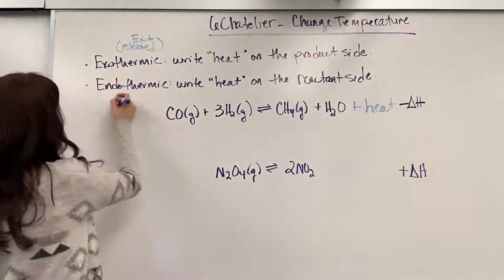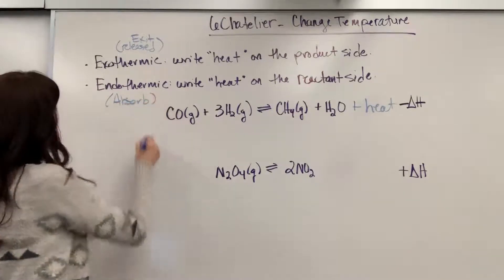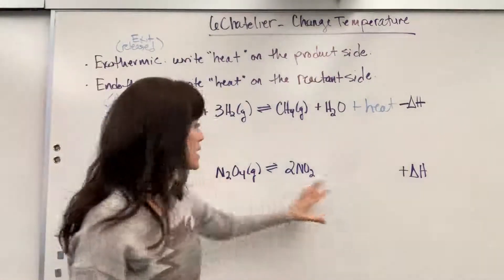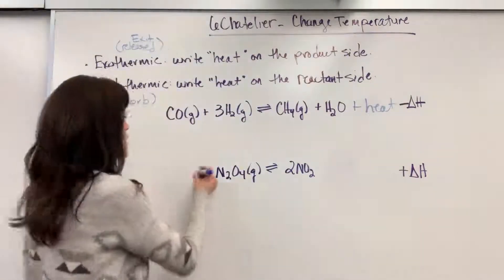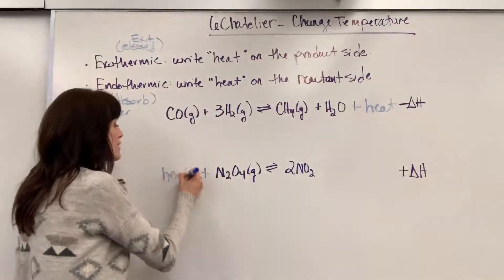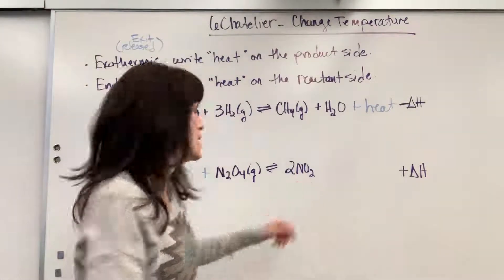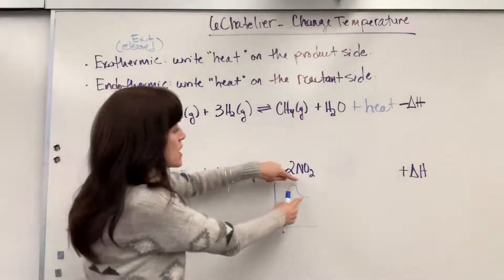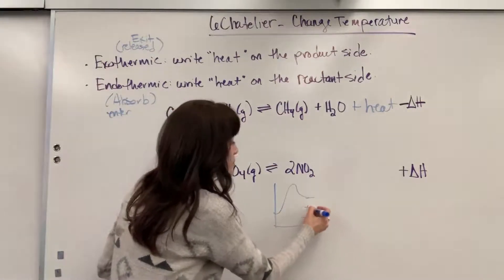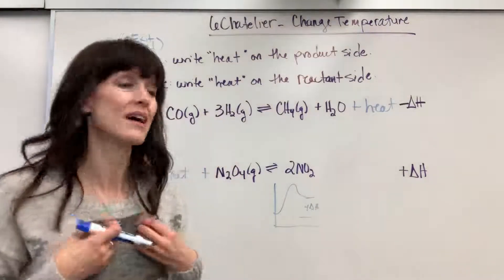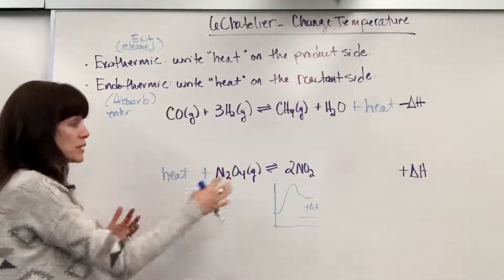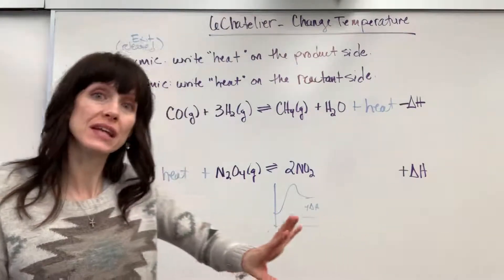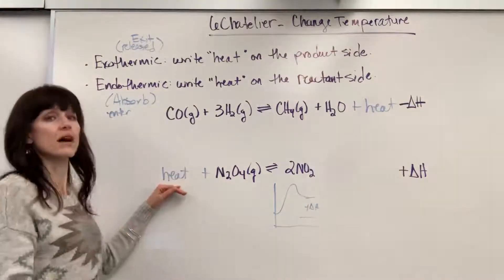Endothermic means to absorb — this reaction absorbs energy. Endo, E-N, enter. When you look at a chemical reaction and it's endothermic, write the word heat on the reactant side. This requires more energy to break bonds than the amount of energy that's released. This is your activation energy diagram — put in a ton of energy to break those reactants, a small amount of energy is released. This difference is your positive delta H — the net energy you have to put in to make that reaction happen. So when you have an endothermic reaction, think endo — enter — write heat on the reactant side.